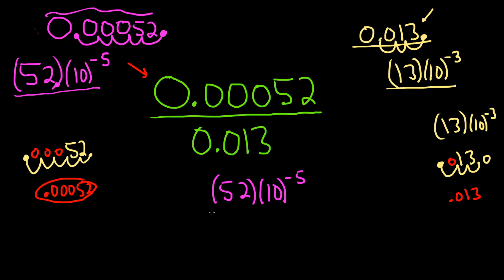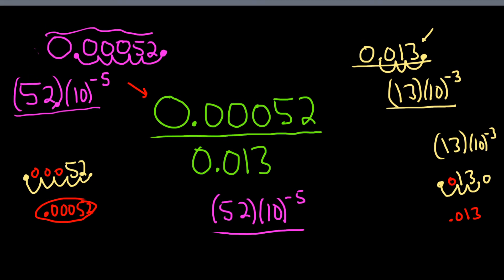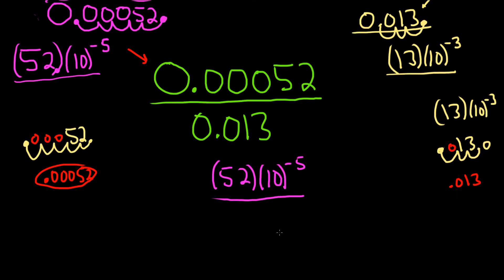So now we'll end up with 13 times 10 to the negative 3. And now 52 over 13, that's 4.